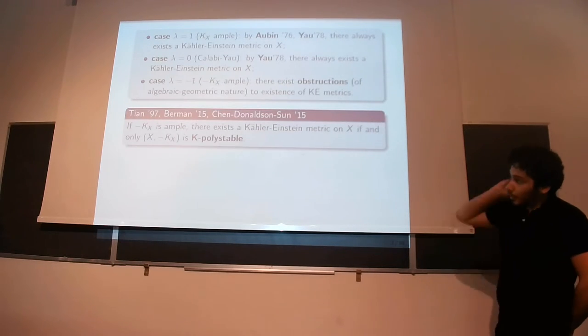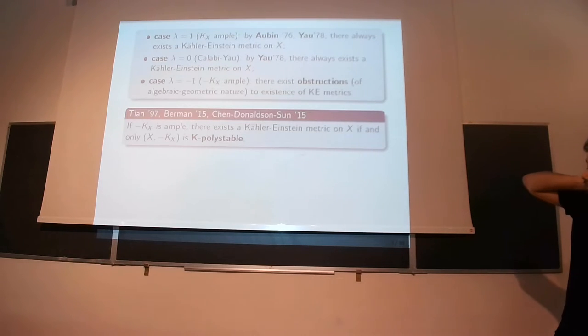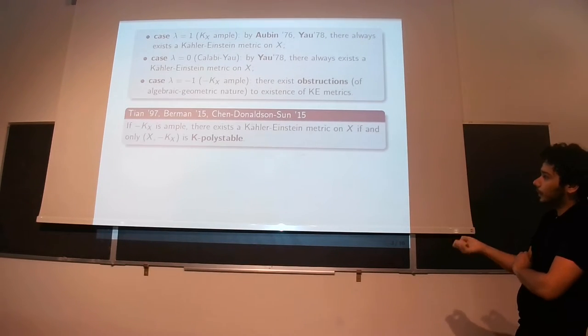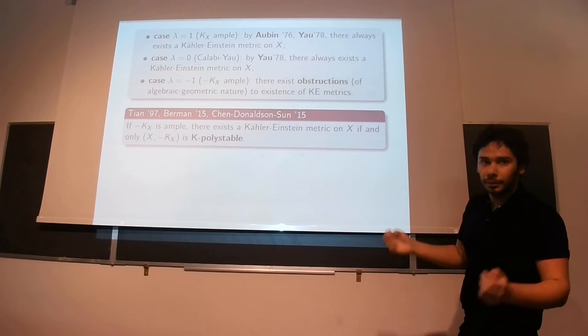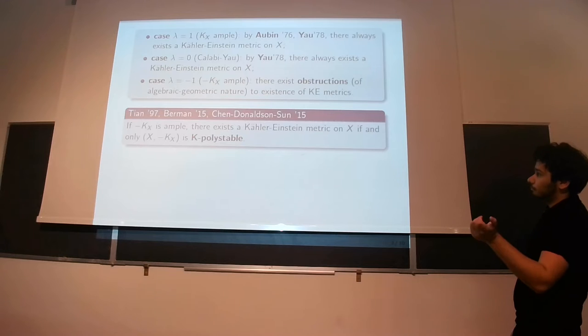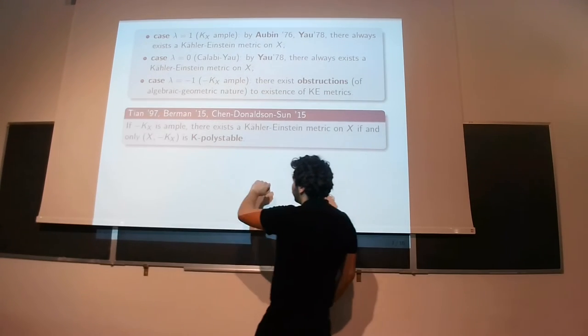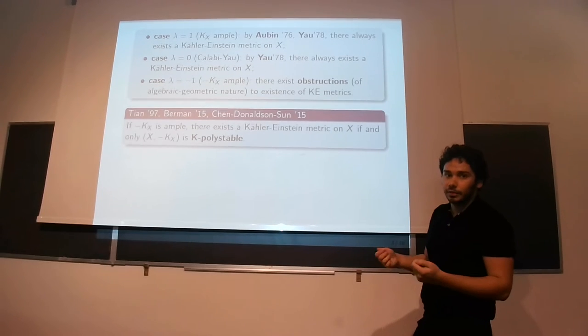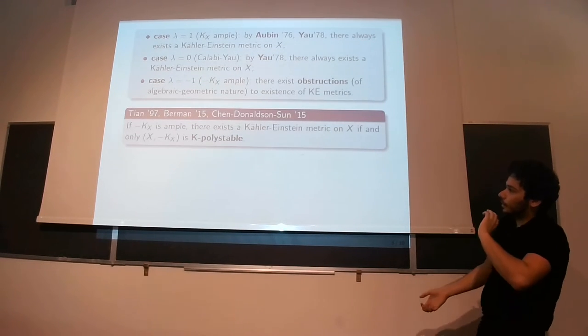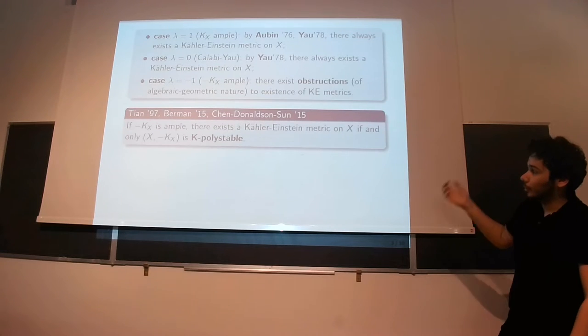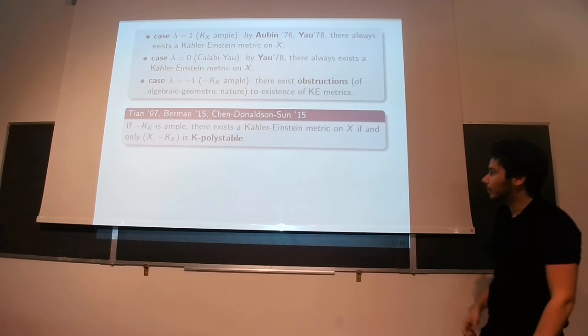The conjecture, which has been solved, was fully understood in the case for minus KX ample. So the main contributors are Tian, Donaldson, and then Chen also. And so the final result of that, so if minus K is ample, then there is a Kähler-Einstein metric on X if and only if X is K-polystable. So the important part is that this K-polystability condition is going to be algebraic, whereas the Kähler-Einstein equation is something analytic. So the statement really means that we can check this quite difficult PDE existence problem using some easier, algebraic condition, which is K-polystability.